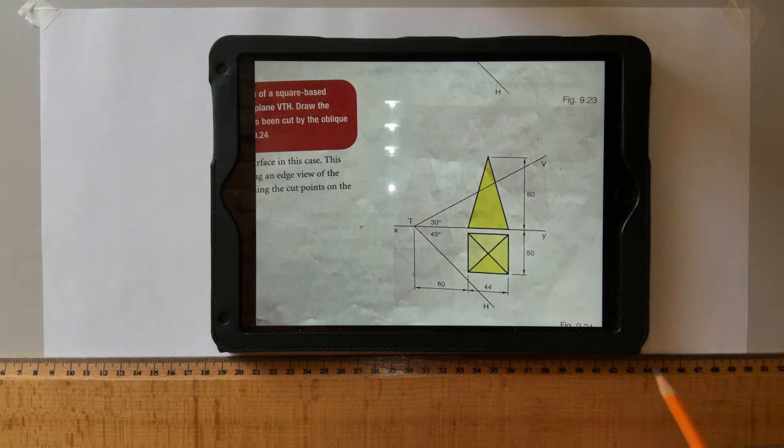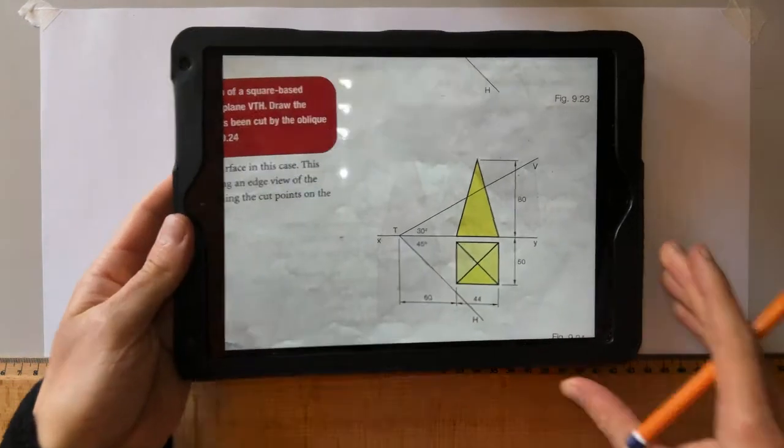So let me use the example yesterday of how to do the true inclination. If we use the auxiliary view method, we can see an edge view of the plane. If we see an edge view of the plane, we can see exactly the true heights of where the cut occurs every single time.